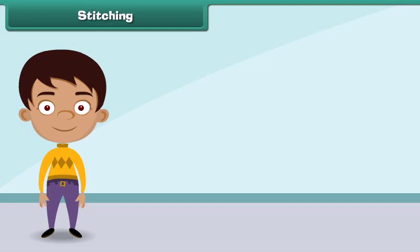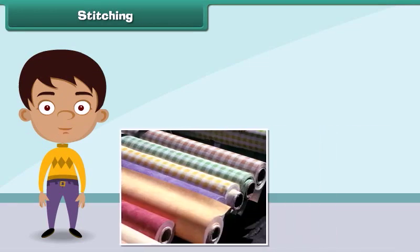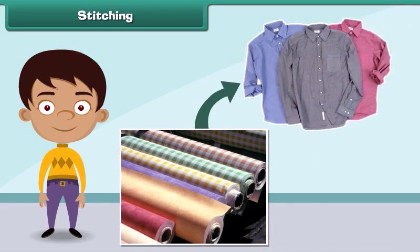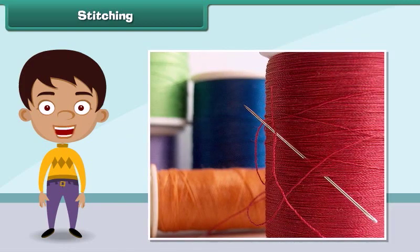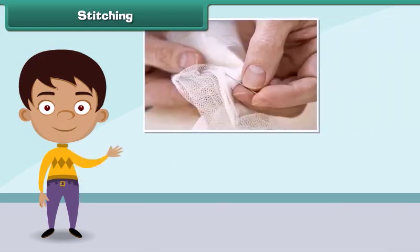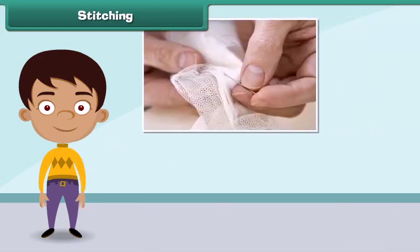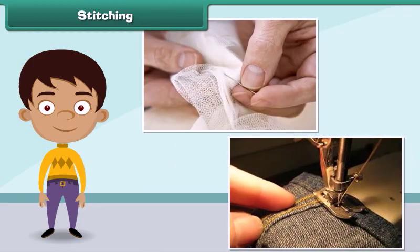Stitching is the process by which fabrics are converted into clothes. It involves sewing a fabric with needle and thread. In olden days, stitching was done by hand, but nowadays stitching is done with machines.